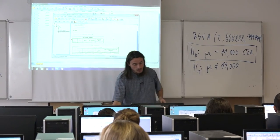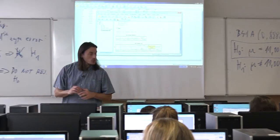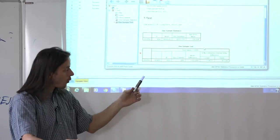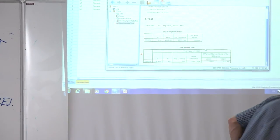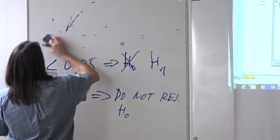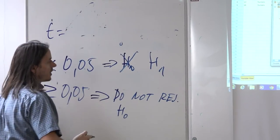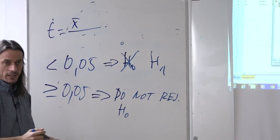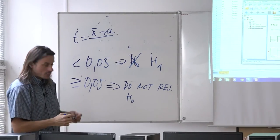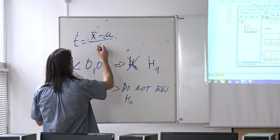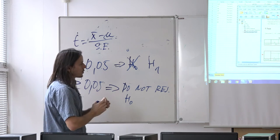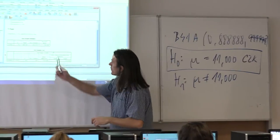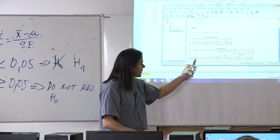Now let's look at the T-test itself. The T statistic is computed by the formula: t equals the sample mean minus the expected value from the null hypothesis, divided by the standard error. Taking 9,668 minus 11,000 divided by the standard error gives approximately negative 6.5. There is also a degrees of freedom value — df — which for the one-sample T-test is computed as the number of respondents minus one: 854 minus 1 equals 853.